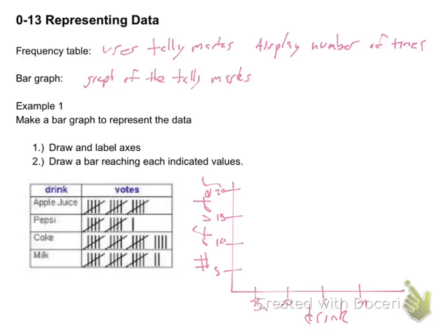All we have to do, then, is make a bar that goes as high as it is. Apple juice goes to 15. So, apple juice, I make a bar that goes up to 15 and back down. Pepsi, it only goes to 11. So, I'm going to go just above 10. Back down.